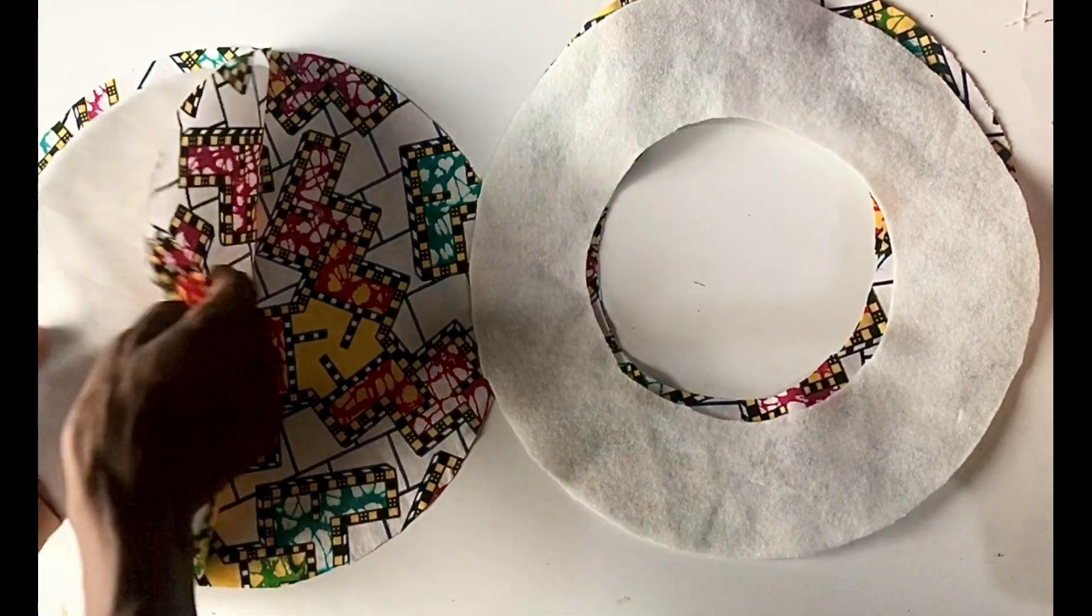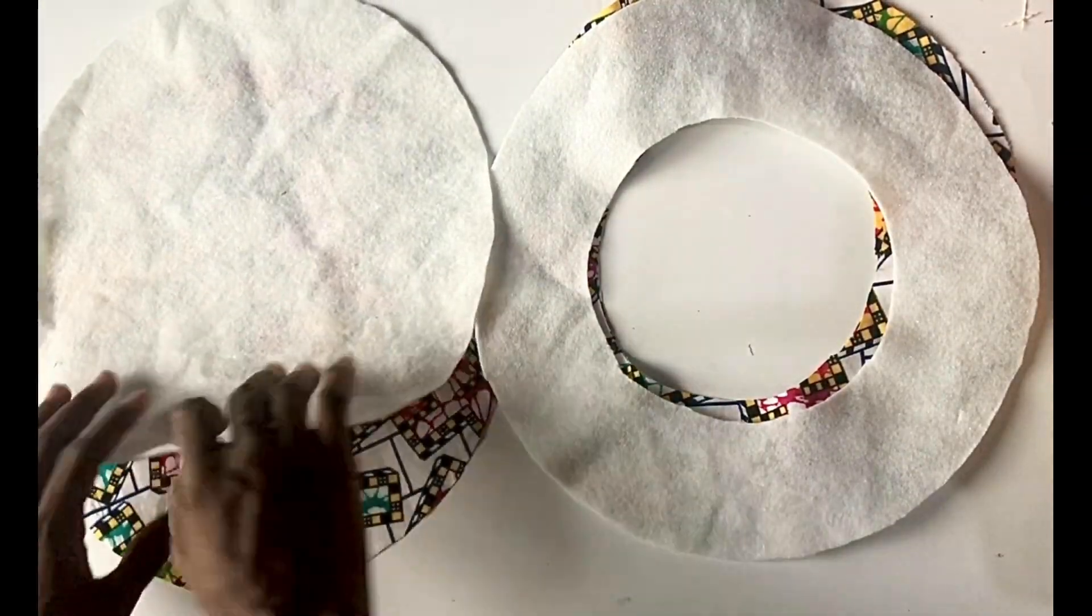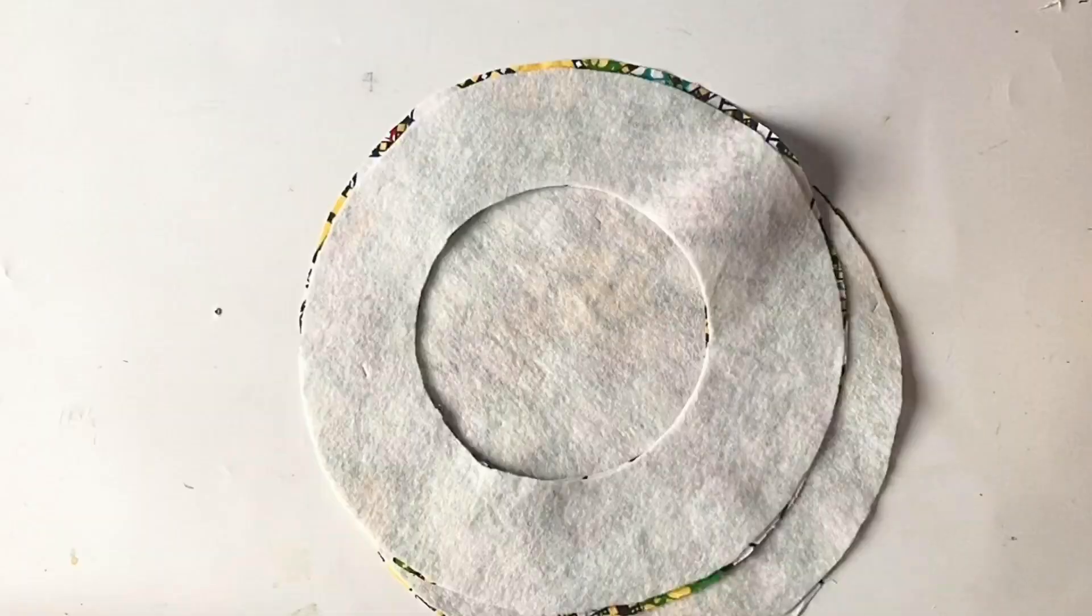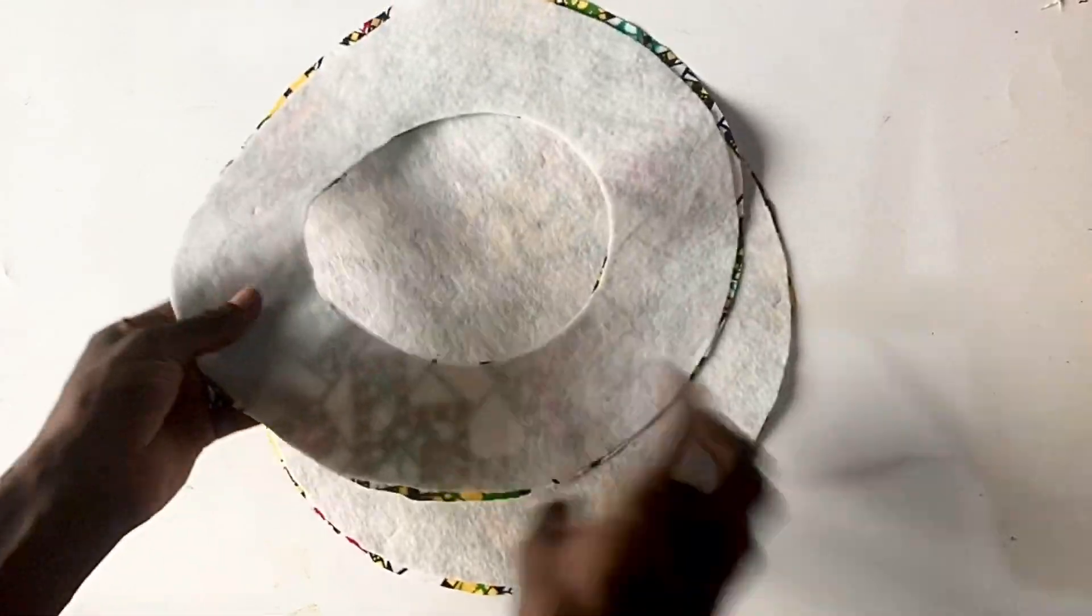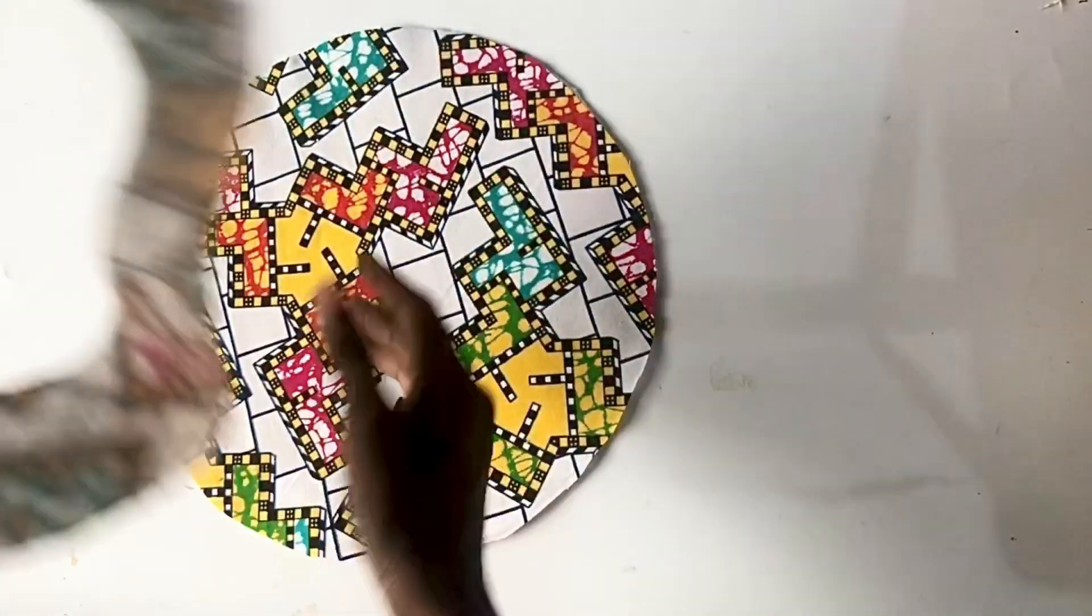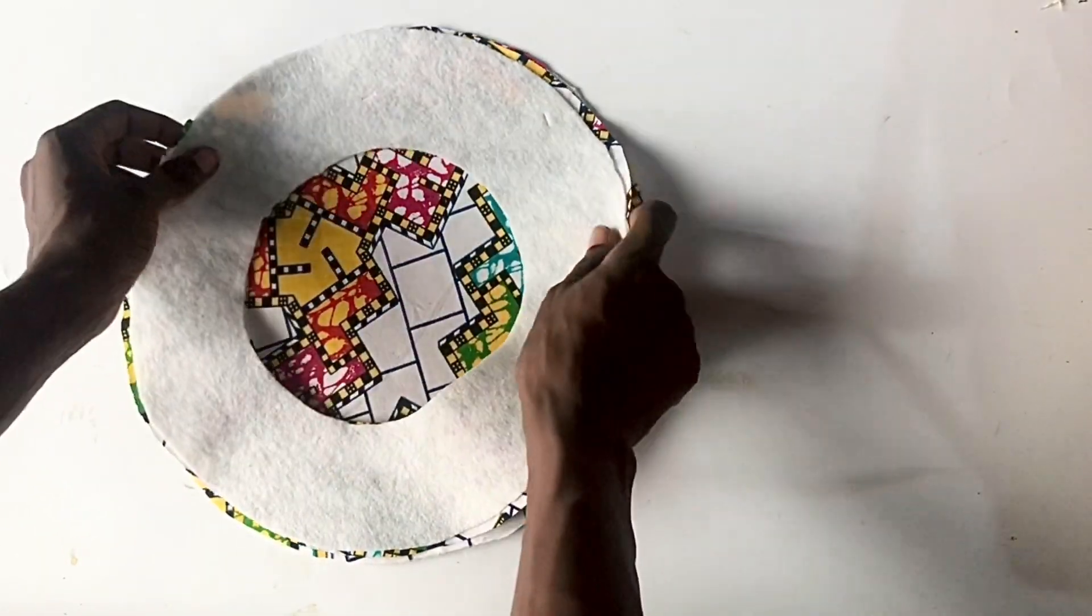After which I would iron it down, so I'll take it to my ironing board now and iron down. Here is what it looks like after ironing. The next thing I'll be doing now is to put the right sides together and take it to my sewing machine and sew.